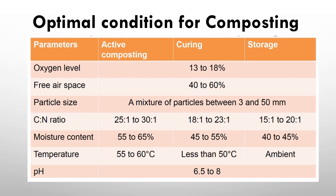The optimal parameters for composting include: oxygen level at 13–18%; free airspace at 40–60%; particle size — a mixture between 3 and 50 mm. Carbon to nitrogen ratio: active composting 25–30:1, curing 18:1 to 23:1, storage 15:1 to 20:1. Moisture content: active composting 55–65%, curing 45–55%, storage 40–45%. Temperature: active composting 55–60°C, curing less than 50°C, storage at ambient temperature. pH ranges from 6.5 to 8.